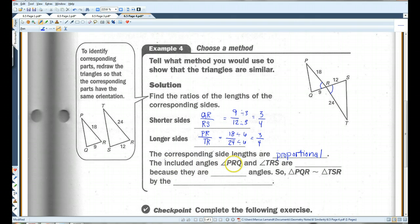The included angles, angle PRQ and angle TRS, are congruent because they are vertical angles. So, the triangles are similar by the SAS similarity theorem.